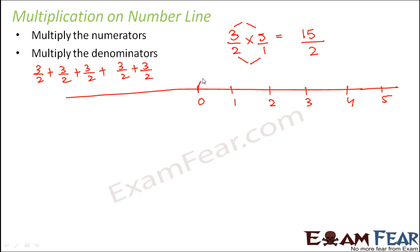So 3/2 is 1 and a half. So this is one jump of 3/2, the next jump of 3/2 would be here, the next jump would be here, and again the next jump would be somewhere here. When you actually take 5 jumps where each jump is 3/2, you reach 15/2 which is nothing but 7 and a half. So 15/2 lies between 7 and 8. Try to do this yourself.